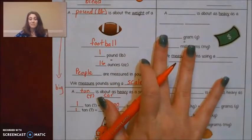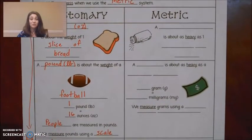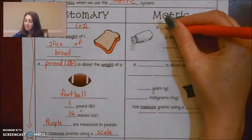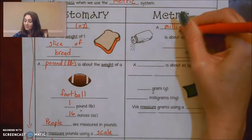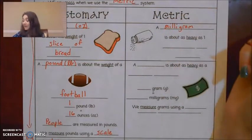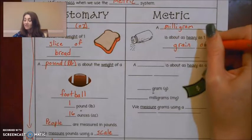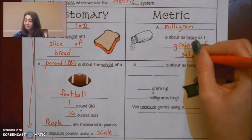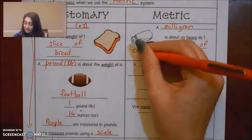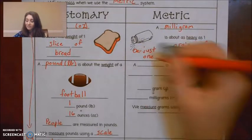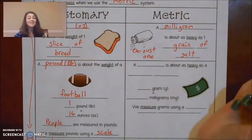All right, we're going to switch over now to mass. The metric system, we use mass. The smallest unit in the metric system is a milligram. A milligram is about as heavy as one grain of salt. It's a tiny, tiny unit of measure.